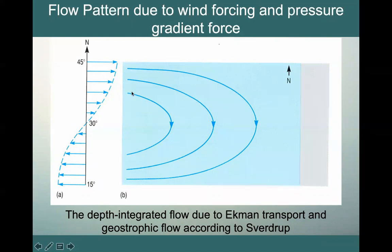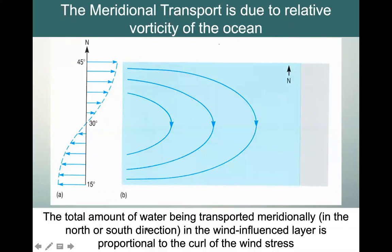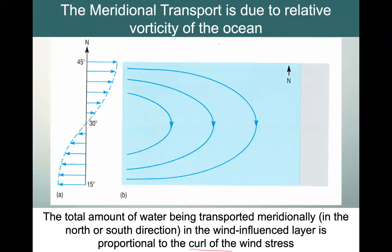So Sverdrup was able to figure out the depth-integrated flow — the total transport due to Ekman transport piling water toward the center of the gyre, combined with geostrophic flow due to the resulting pressure gradient force. He found that this depth-integrated flow looks a lot like what we see on the eastern boundary current of the North Atlantic gyre. One way to think about this is to consider the total amount of water being transported meridionally — that's the north-south transport.